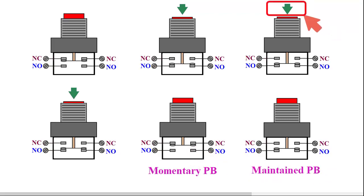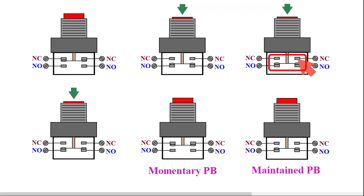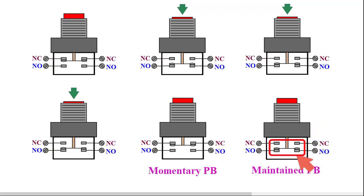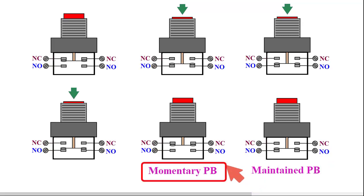For a maintained push button, when pressure is applied, the normally closed contact becomes open and the normally open contact becomes closed. When the pressure is released, the contact behavior does not return to normal — it maintains the condition just as when it was pressed. Normally, switches used in homes for lights and fans are maintained type. In industry, momentary push buttons are normally used to run motors, fans, lights, and other devices.